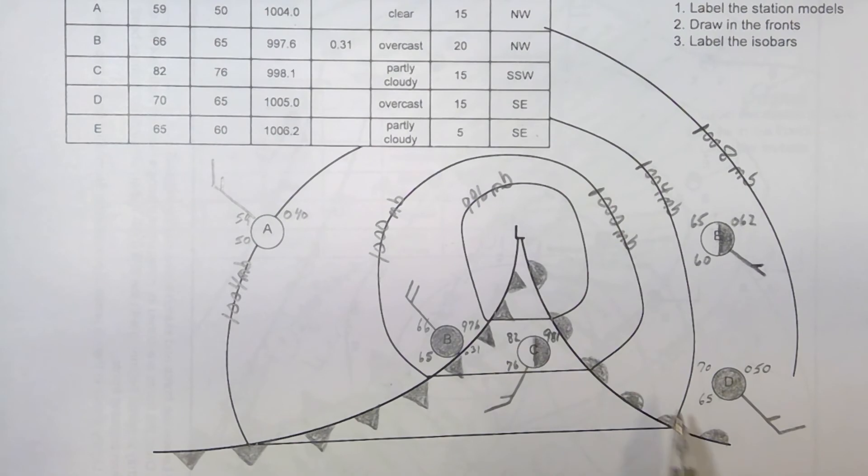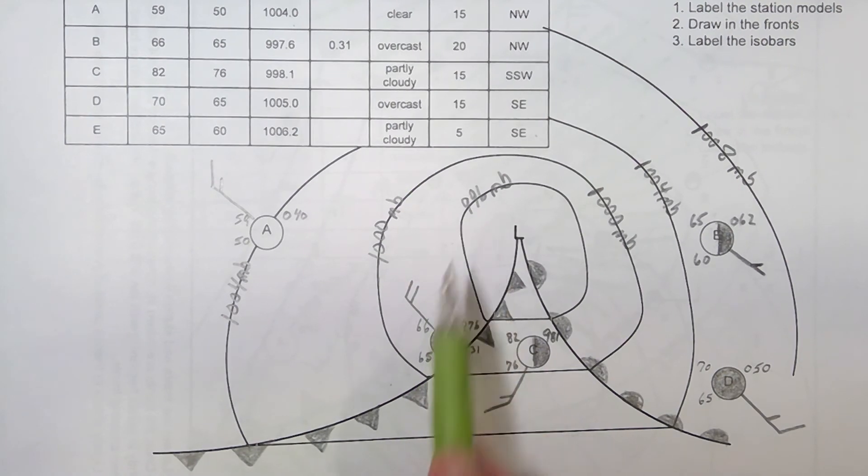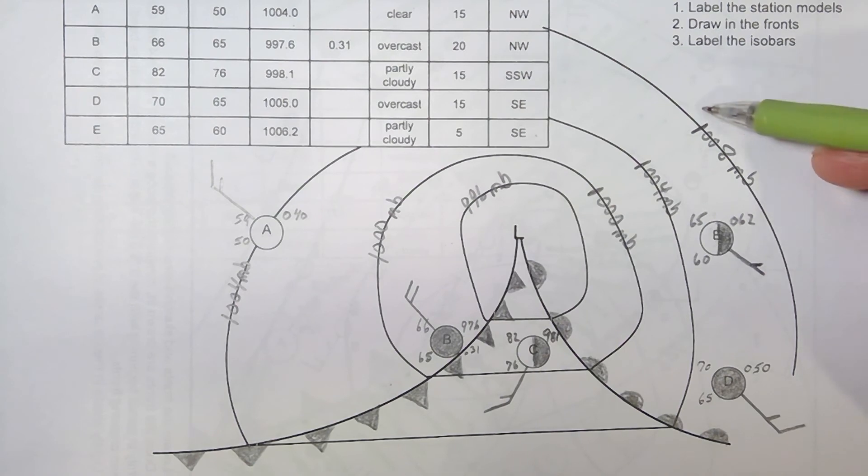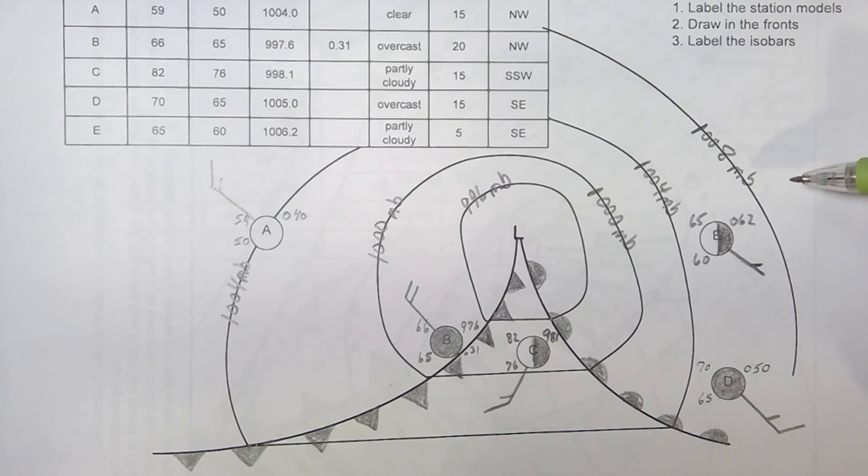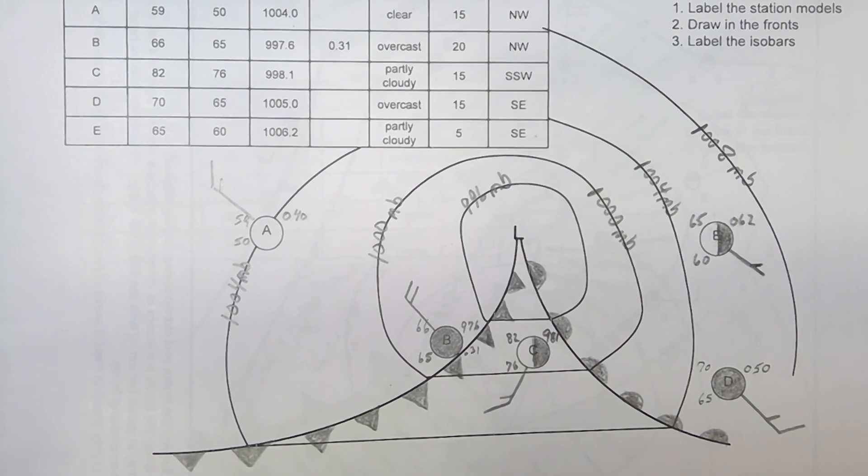When you look at these, you've got one, two, three, four, five station models that you should check. The lowest isobar is labeled 996, and you should have gone all the way up to 1008 millibars there. But this low-pressure cyclonic storm system is definitely going to be one of the keys for our understanding of weather.